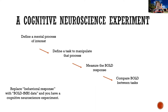The logic is exactly the same. You find some mental process of interest — semantic processing. You define a task that can manipulate that — in our case, reading sentences — and then you measure BOLD while somebody reads sentences.